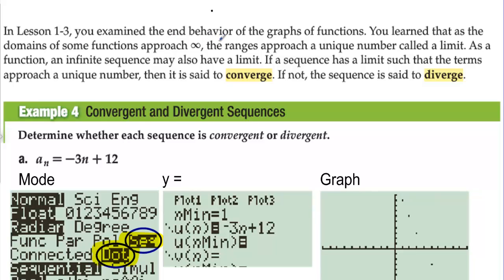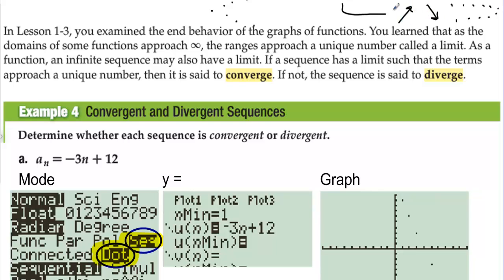As the domain of some functions approaches infinity, the range approaches a unique number called a limit. An infinite sequence may also have a limit. If a sequence has a limit such that the terms approach a unique number, it is said to converge. If not, the sequence is said to diverge. If the sequence values level off, we have a limit. If they shoot to infinity, negative infinity, or oscillate with widening values, that's diverging.